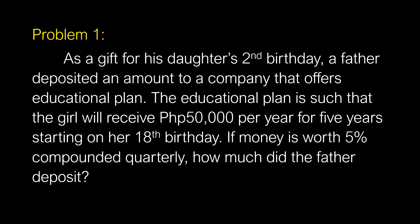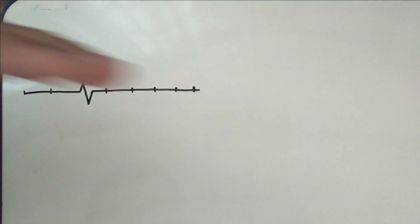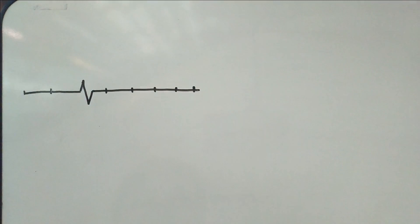Let's solve Problem 1. As a gift for his daughter's second birthday, a father deposited an amount to a company offering an educational plan. The plan provides the girl with 50,000 per year for 5 years starting on her 18th birthday. If the money is worth 5% compounded quarterly, how much did the father deposit? We start with the cash flow diagram.